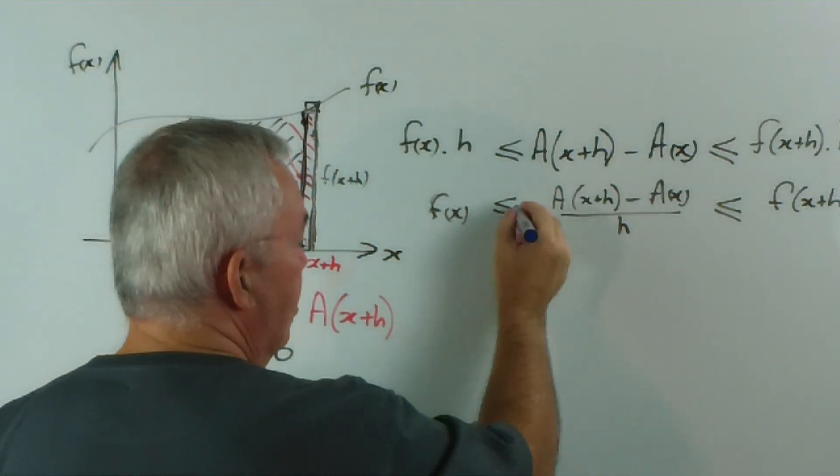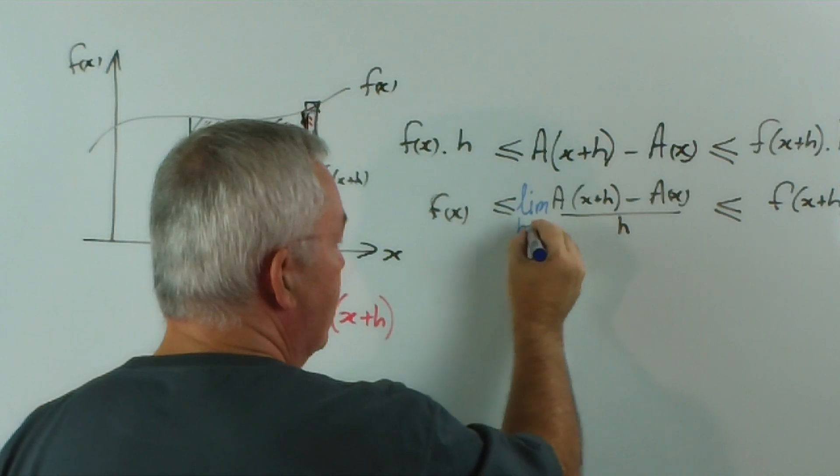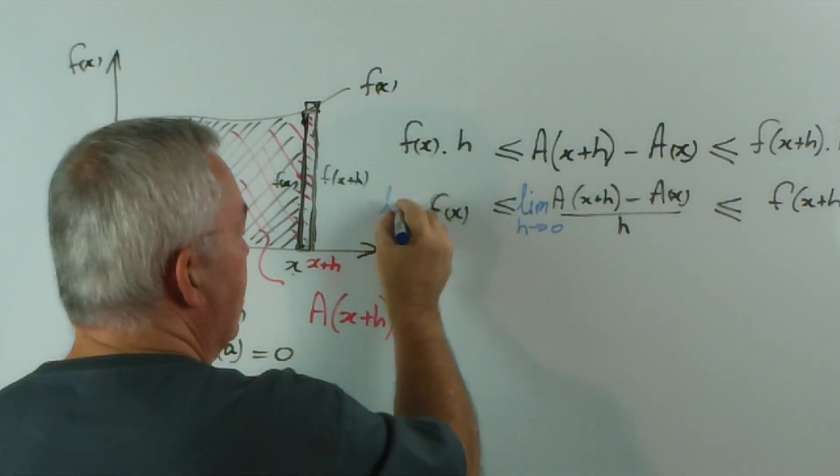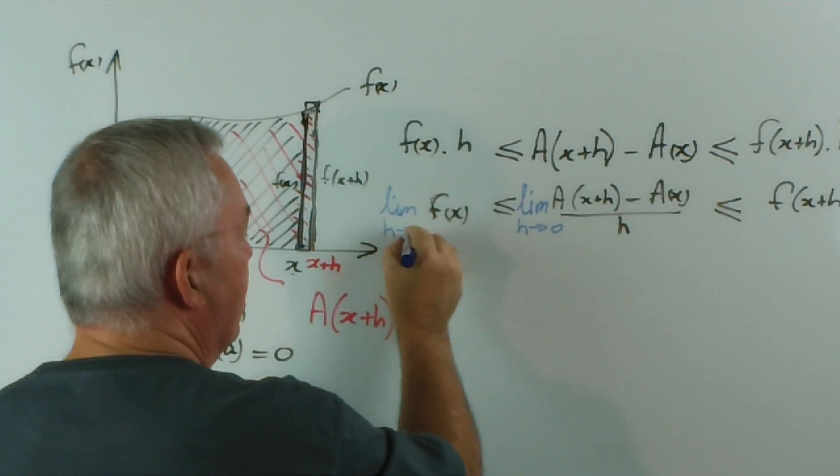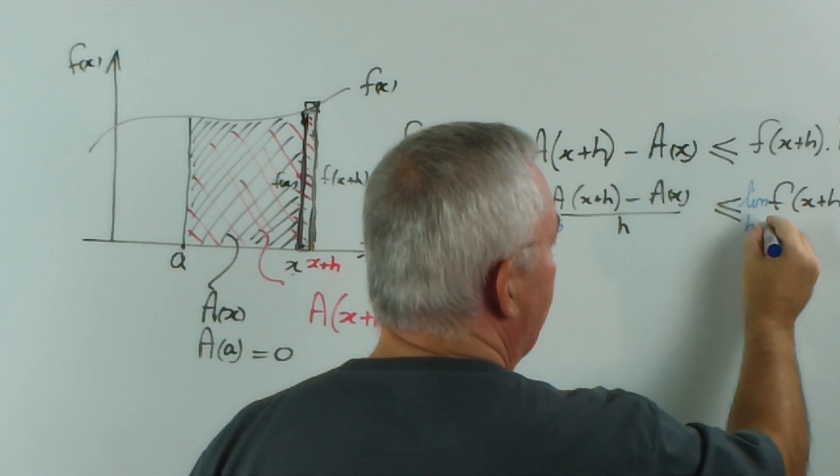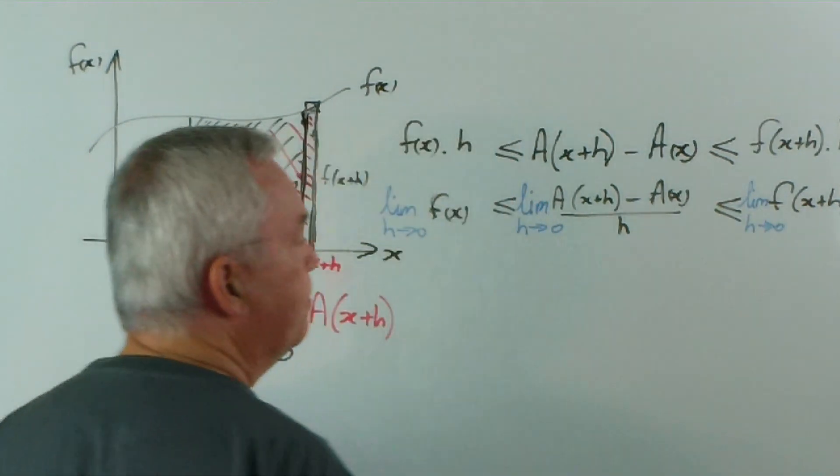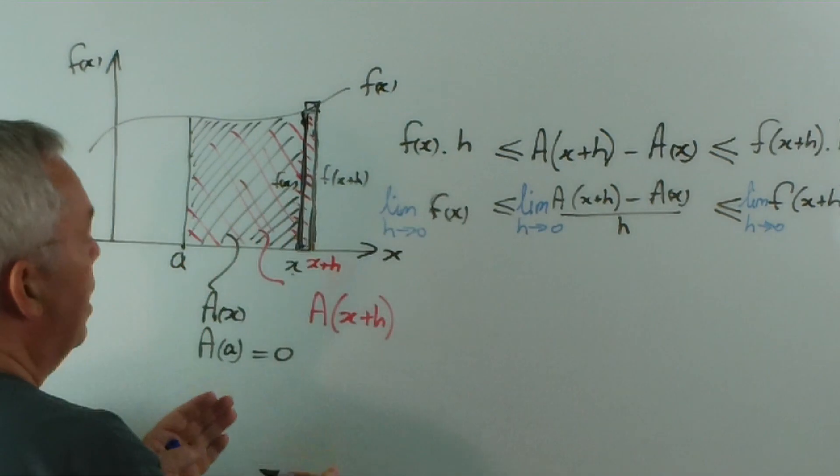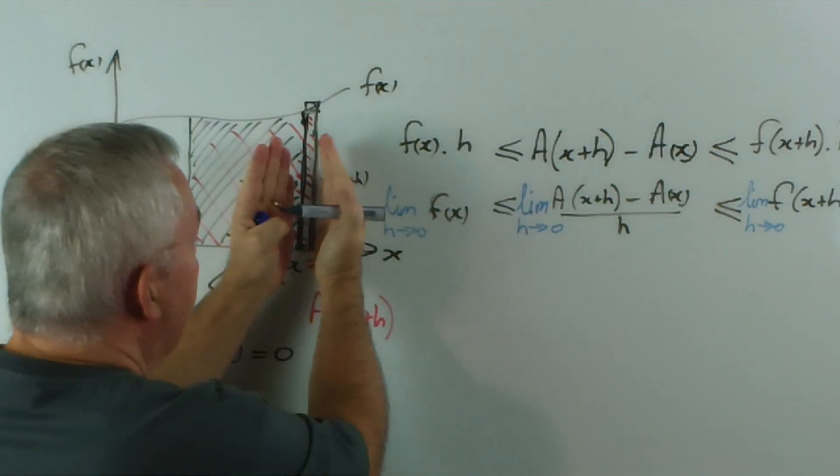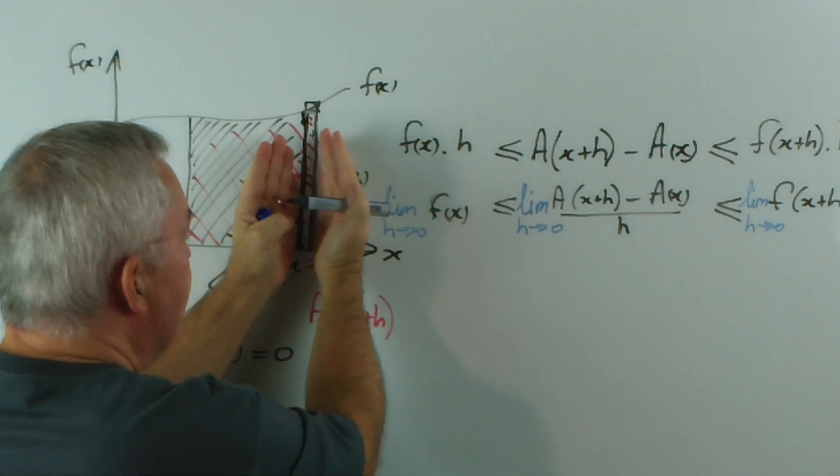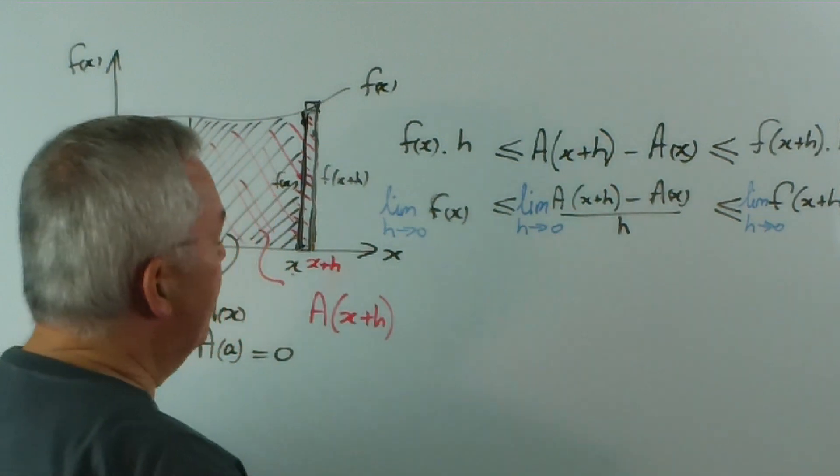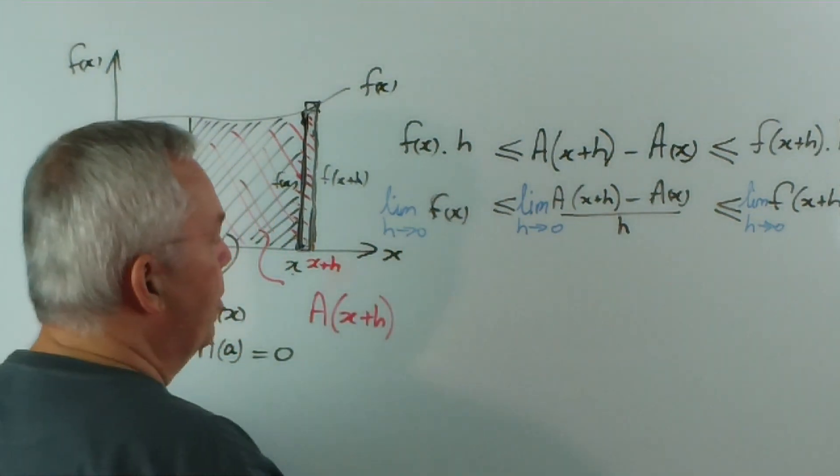And you might recognize this pattern here if you've done differentiation from first principles. What we're going to do is take the limit as h goes to zero of this, which means we have to take the limit as h goes to zero of that, and the limit as h goes to zero of that. What does that mean on the diagram? Well, it means h is the width of the strip. So we're taking the limit as the strip narrows and narrows microscopically small. Let's see what we get.